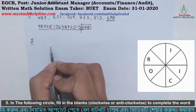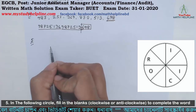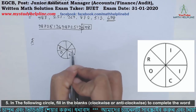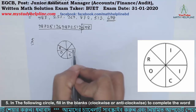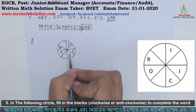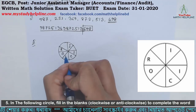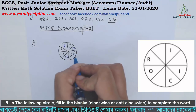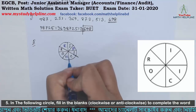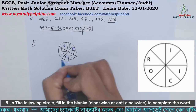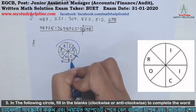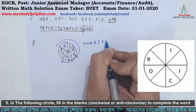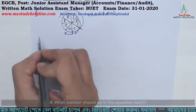Number 5. In the following circle, fill in the blanks clockwise or anticlockwise to complete the word. The word is R-O-C-I-I. The answer is R-O-R-I-F-I-C.